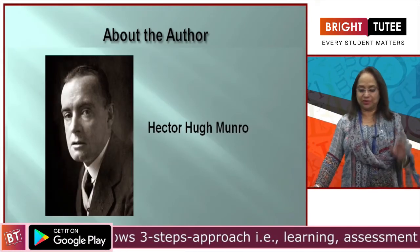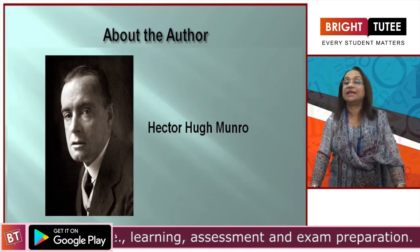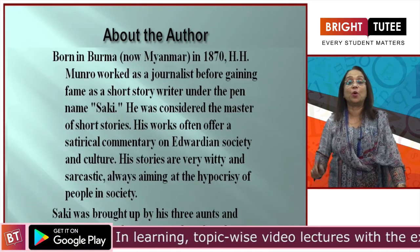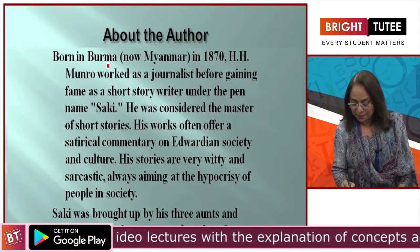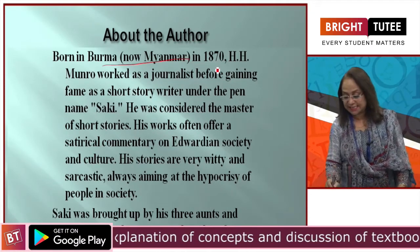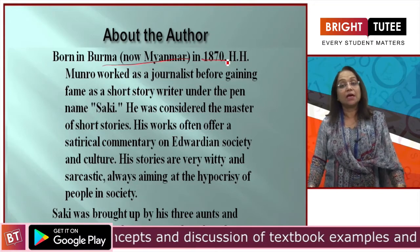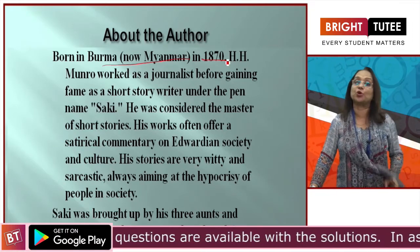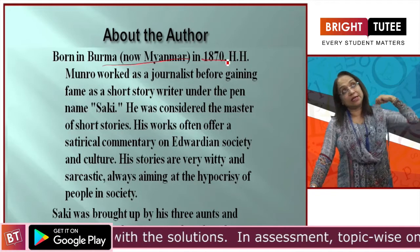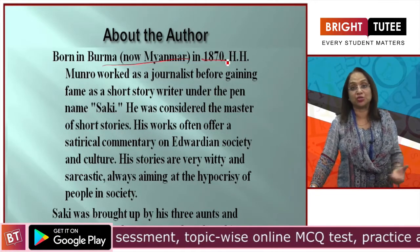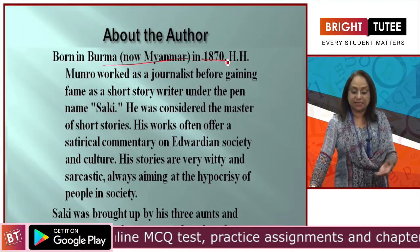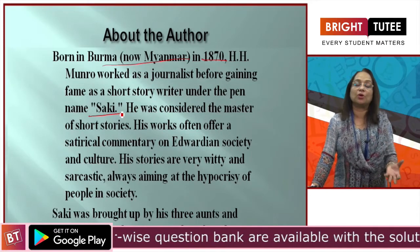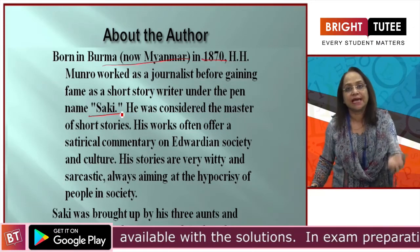Hector Hugh Munro. He was born in Burma — now it is called Myanmar — in 1870. Initially he worked as a journalist and then gradually he took to writing short stories. He made a big name by writing short stories and he wrote under the pen name Saki. That was his pen name. So whenever you come across a book or a story written by Saki, you know it is Hector Hugh Munro.